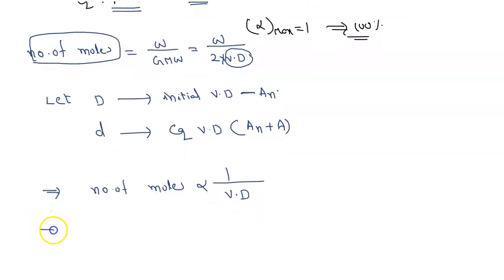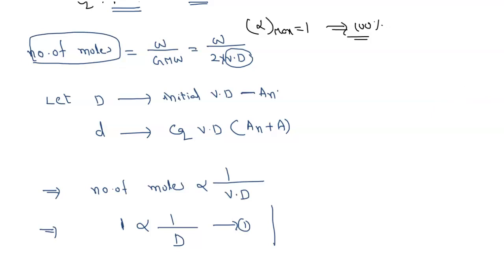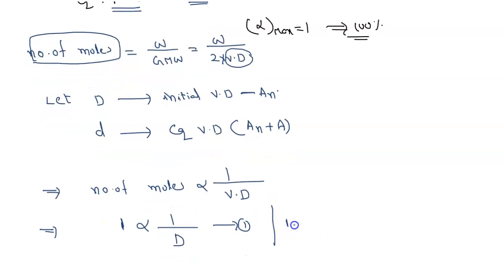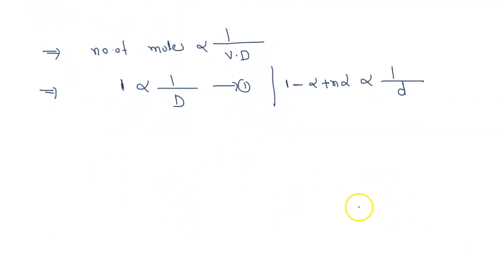Initially we have only one mole, which is inversely proportional to initial vapor density capital D. At equilibrium the total number of moles is 1 minus alpha plus n·alpha, which is inversely proportional to small d, the equilibrium vapor density. That simplifies to 1 minus alpha into 1 minus n, which is inversely proportional to equilibrium vapor density small d.